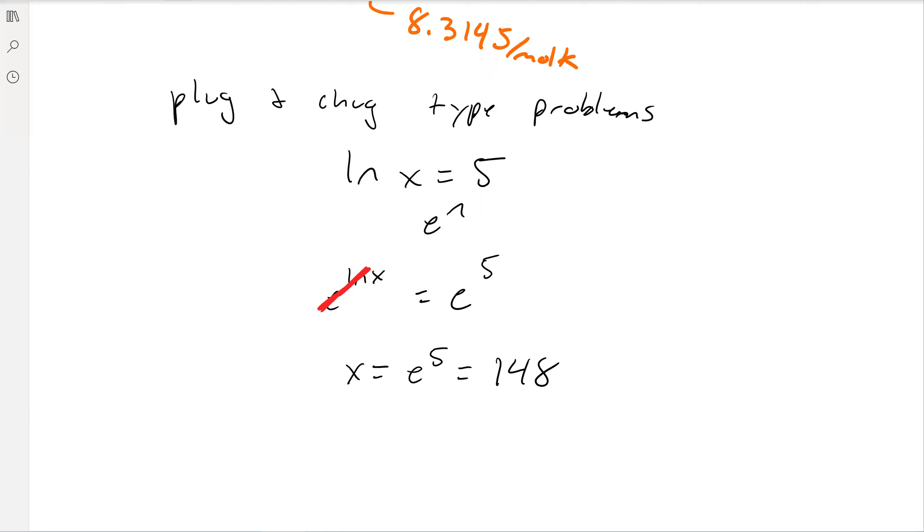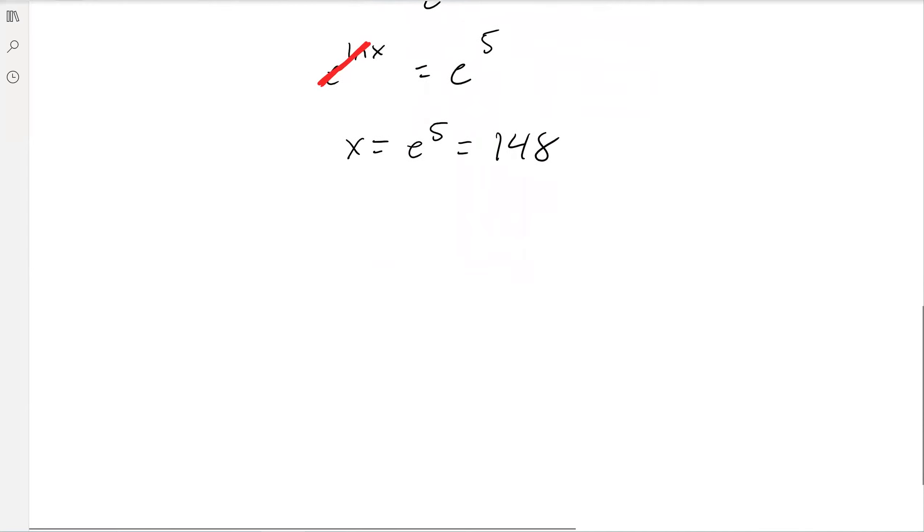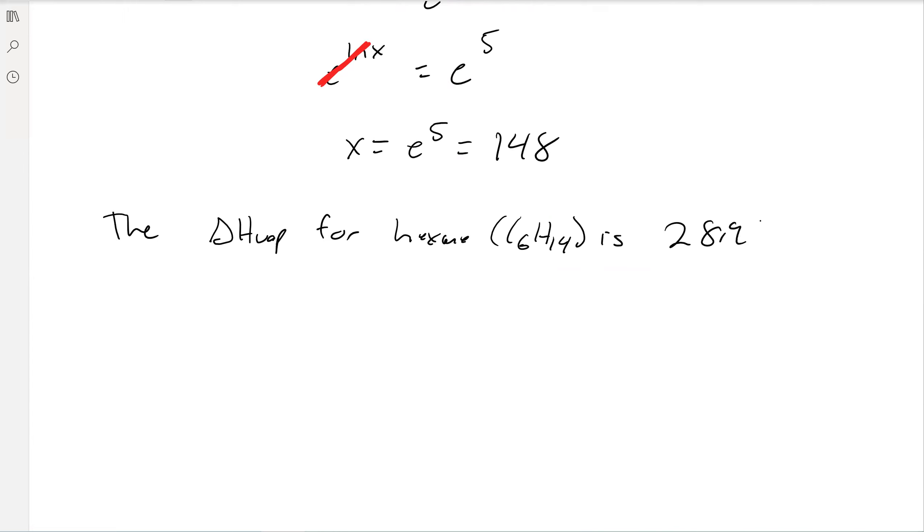Just understand how to do that algebraic thing. Let's take a look at an example problem. The delta H of vaporization for hexane C6H14 is 28.9 kilojoules per mole, and its normal boiling point is 68.73 degrees Celsius. What is the vapor pressure at 25.00 degrees Celsius?